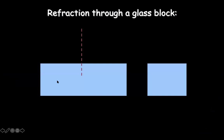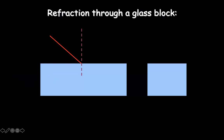Imagine you have a glass block here and this is the normal. The normal is the perpendicular drawn at the point of incidence. Let's say light strikes here. Now technically light should travel straight, because the property of light is it always travels in a straight line — that is what is called rectilinear propagation of light. But as light enters inside the glass, it actually slows down and it bends towards the normal, as you see here.